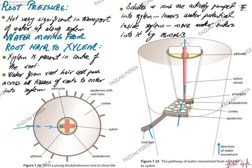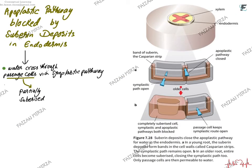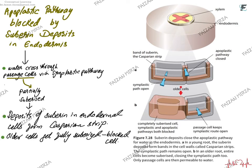Water takes two pathways as discussed: the apoplastic pathway through cell walls only by diffusion, with no living parts involved; and the symplastic pathway where living membranes are involved — osmosis crosses membranes and diffusion through plasmodesmata. In the endodermis, cells are partially suberized and a Casparian strip — a band of suberin — is deposited in the cell wall, preventing apoplastic pathway movement. Water can only enter through the symplastic pathway. As cells grow older, more suberin is deposited and the cell becomes blocked entirely, allowing neither pathway. Passage cells with only the Casparian strip allow only symplastic movement.